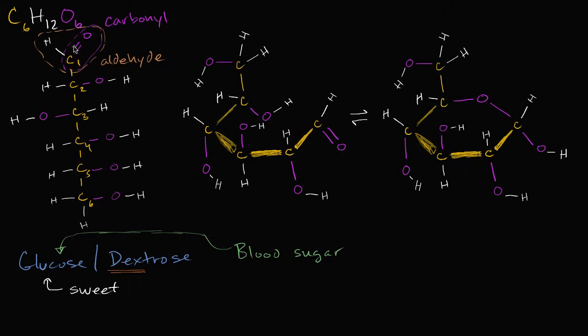So glucose, when it's written, when it's drawn as a straight chain, or when it's in a straight chain form, it would be considered an aldehyde. And then, of course, it has all these hydroxyl groups on them. And these hydroxyl groups, these OH groups over here, that would officially make glucose also, it would officially make it an alcohol.